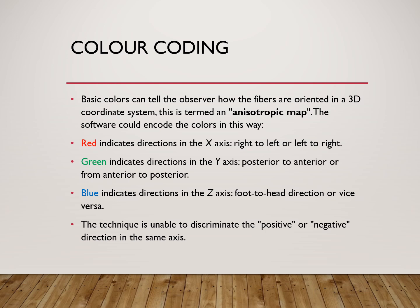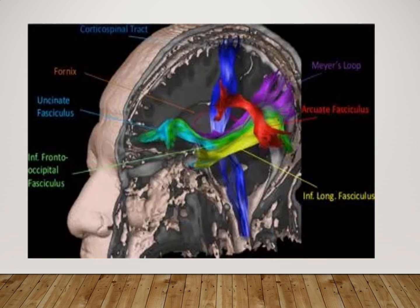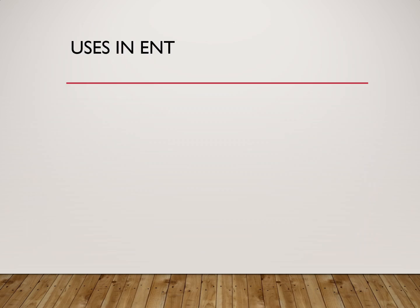The technique is unable to discriminate the positive or negative direction within the same axis. This picture shows the x-axis (right-to-left or left-to-right) in red, green indicating the antero-posterior direction, and blue indicating the cranial-caudal direction.